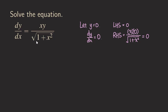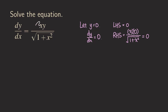That means y equals 0 satisfies the equation. We still need to deal with the situation when y is not equal to 0, but y equals 0 is one of the solutions — it's a constant solution. Now let's assume that y is non-zero, so we can divide both sides by y to separate the variables.